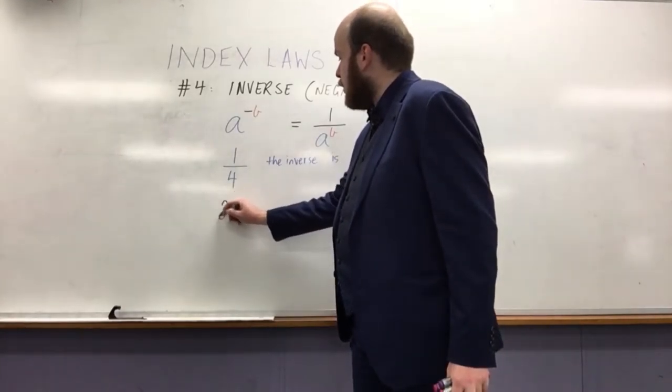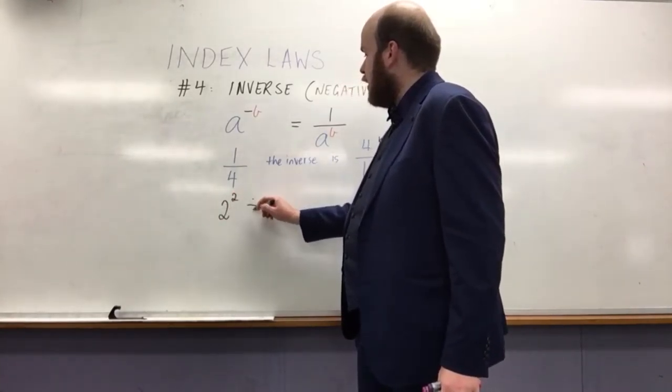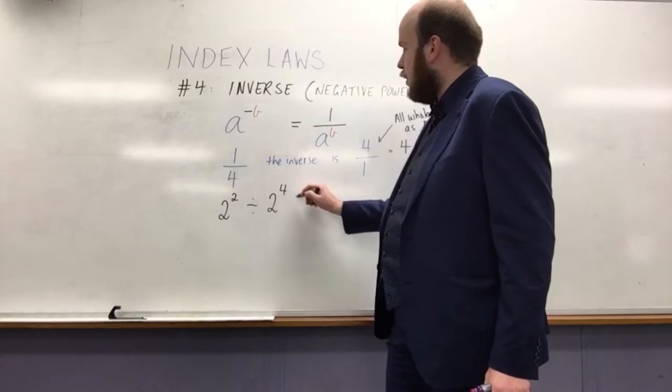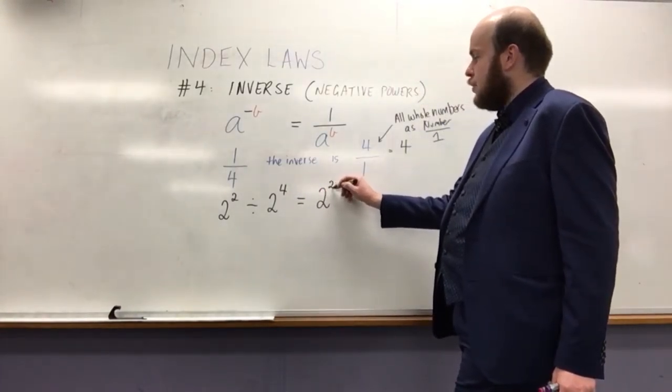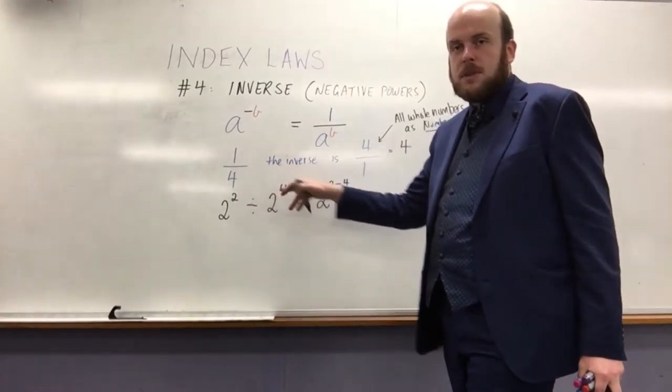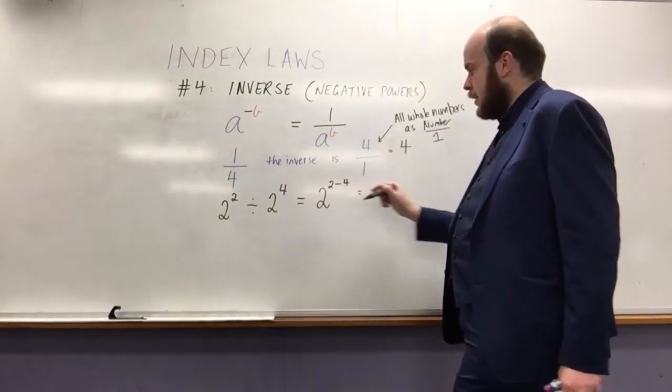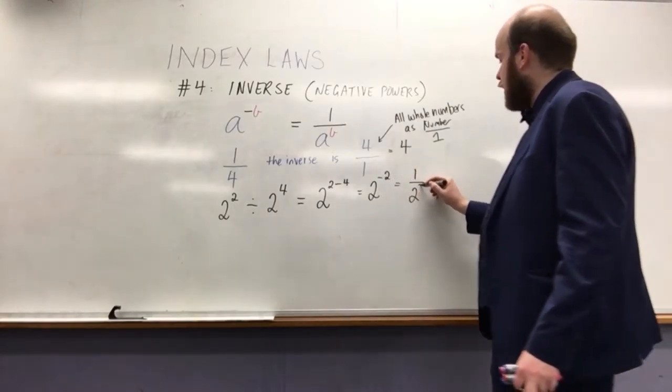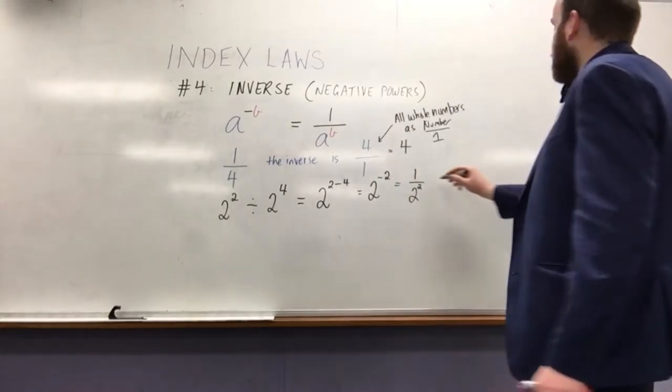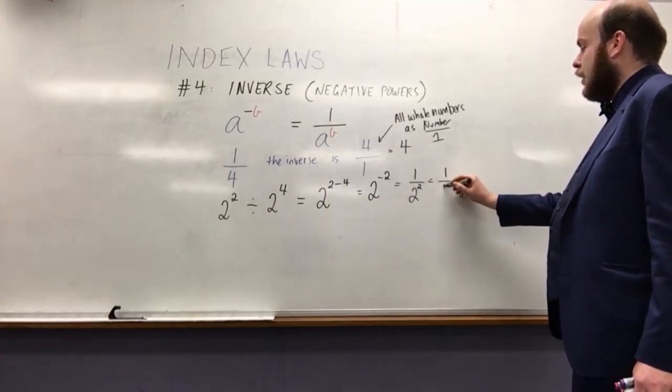For example, if I had 2 to the power of 2 divided by 2 to the power of 4, what I'm suggesting is that this would be 2 to the power of 2 minus 4, because divisions, you subtract the powers, as long as the bases are the same, and that would become 2 to the power of negative 2, which would be 1 over 2 squared, and this would be equal to 1 over 4.